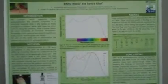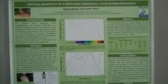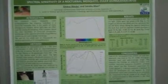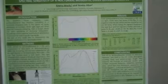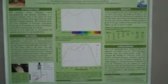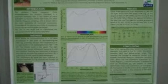Not a lot is known about the spectral sensitivity of different insects, and Culex quinquefasciatus are often monitored using light traps. What we wanted to know is: can we learn more about what different wavelengths Culex mosquitoes can see, and use that to help inform trap design?